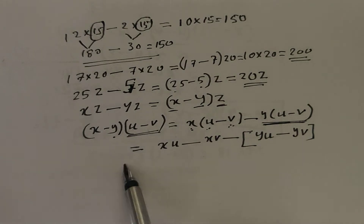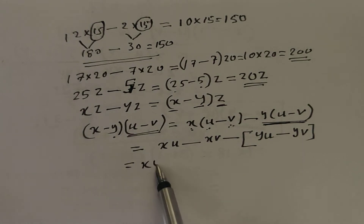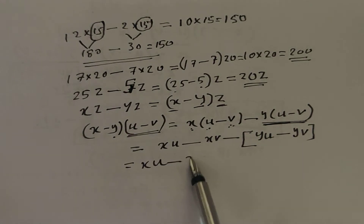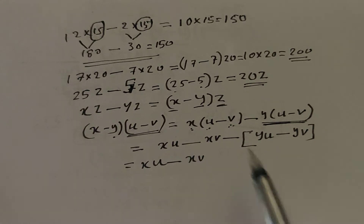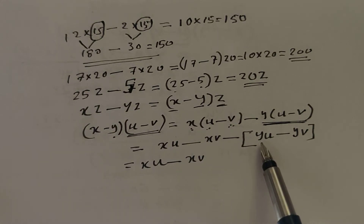For this calculation, this can be written as XU minus XV, and we want to subtract YU. But YU is subtracted by YV. So X minus Y into U minus V equals XU minus XV minus YU plus YV.